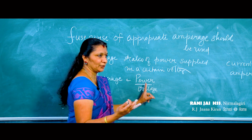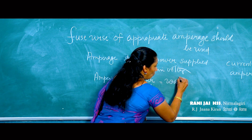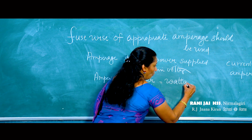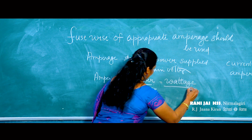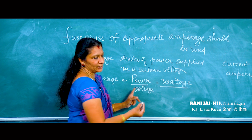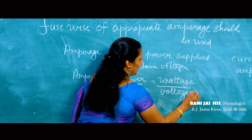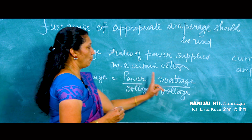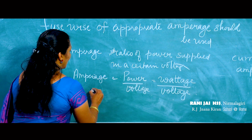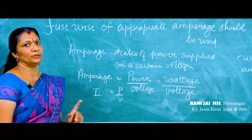The unit of power is watt, so you can write amperage as wattage divided by voltage. In formula form, you can write it as I is equal to P by V. That is the formula you can use.